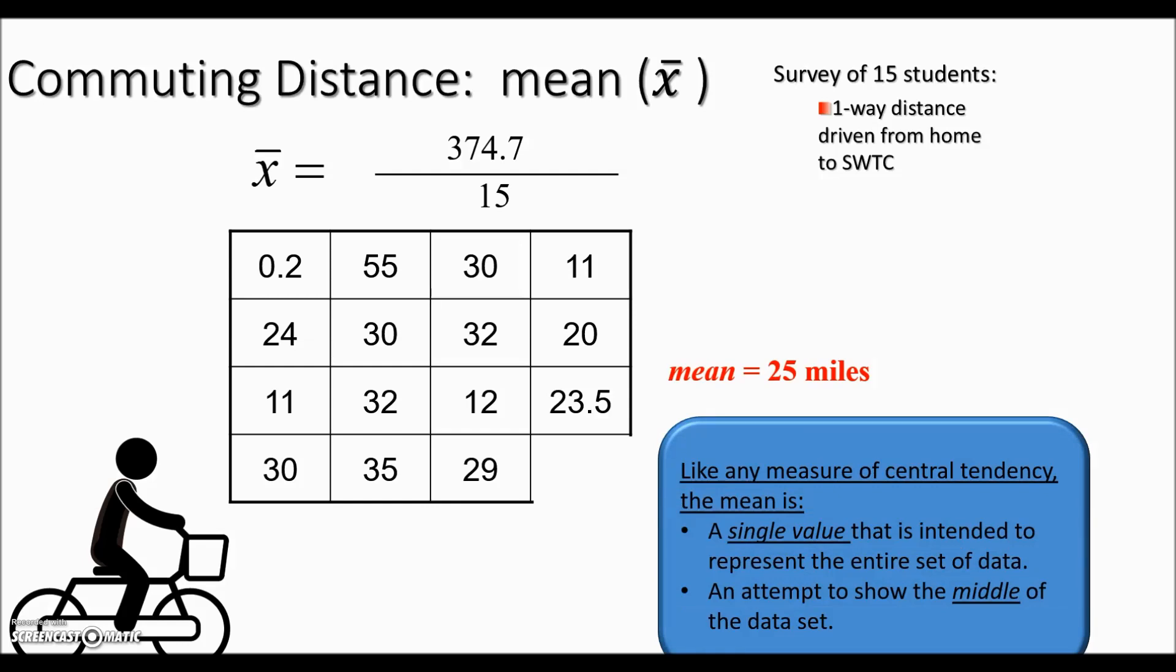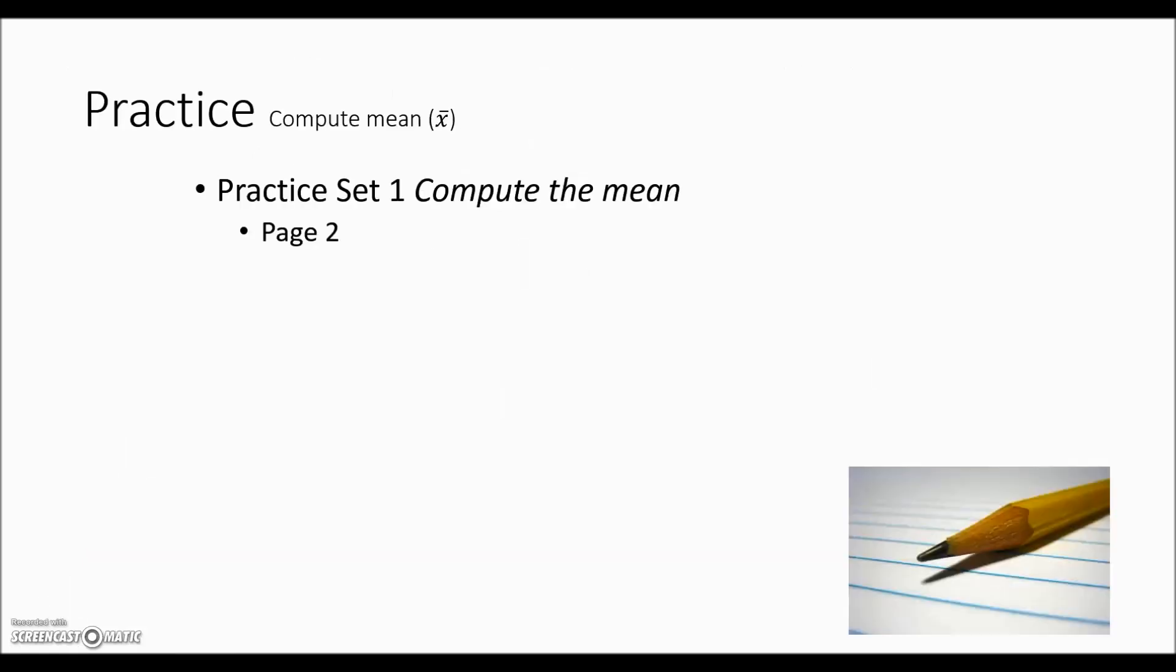This mean is a measure of central tendency. It's a single value to represent the entire group and it's an attempt to show the middle of this data. On page 2 in your textbook, you should find some additional practice computing the mean.